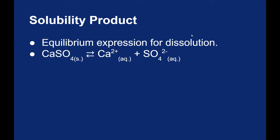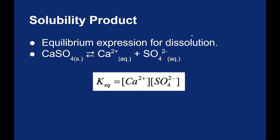If I were to write the equilibrium expression, I would say that the equilibrium constant would equal the concentration of the calcium ions times the concentration of sulfate ions. We would not include the calcium sulfate because it's a solid, and solids just like liquids don't appear in our equilibrium expressions.